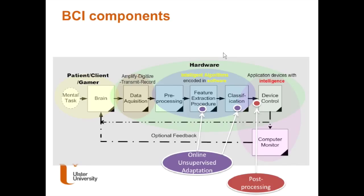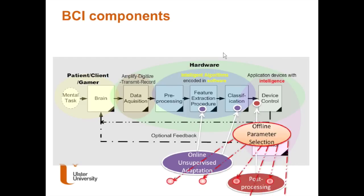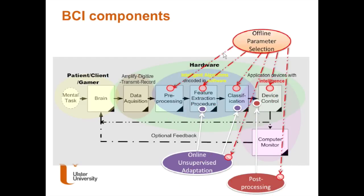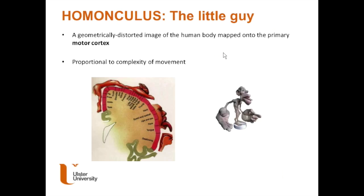On top of that, unsupervised adaptation can be applied while the person uses the BCI, adapting the features or the classifier online in real time. There are many parameters associated with these stages, which are normally tuned in an offline analysis.